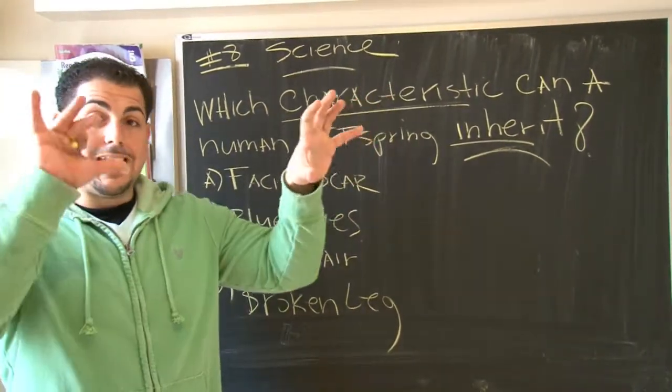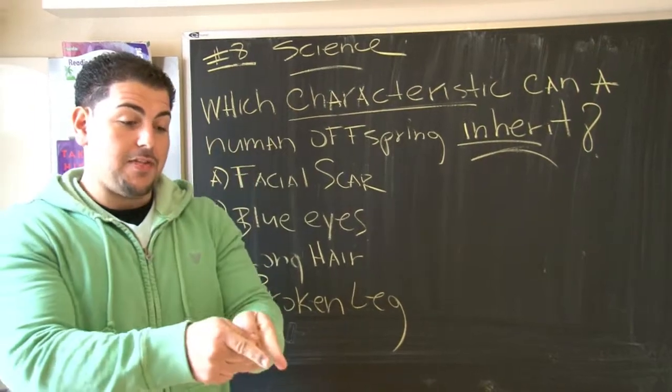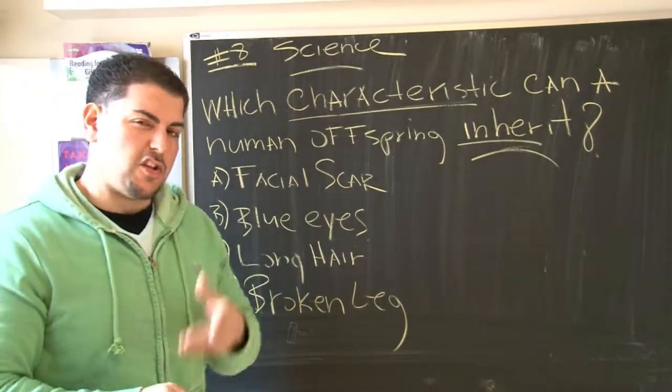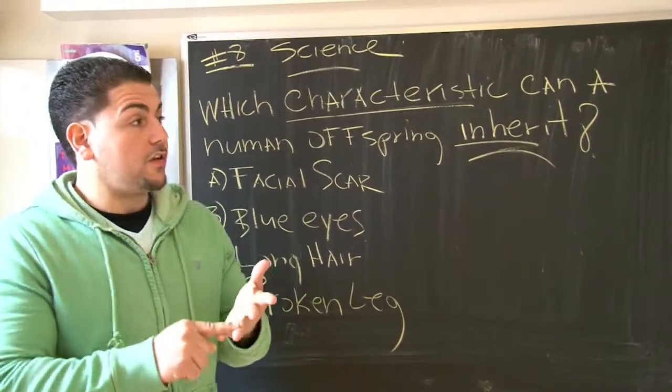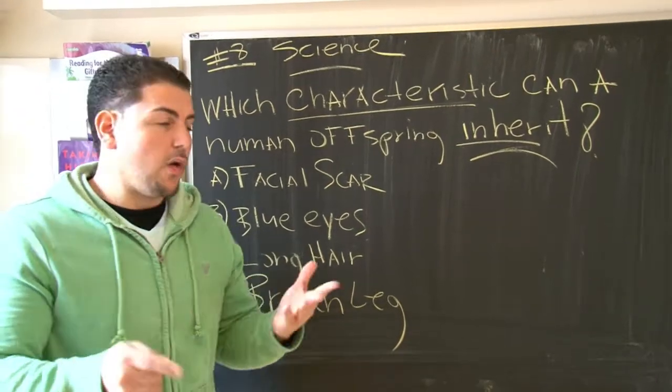So you take her genetics, his genetics, you mesh them, and then you have your own genetic makeup. And genetics is what? Your DNA, your cells, how you look, all these things.